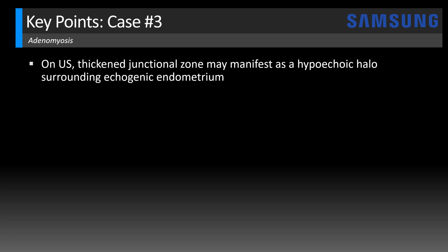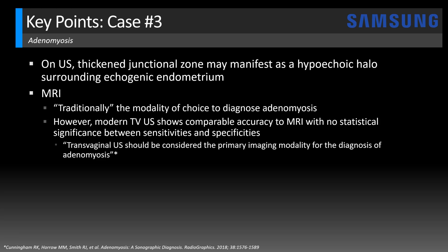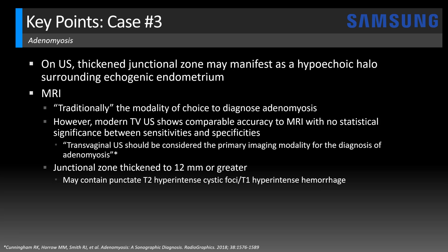Key points for the final case: On ultrasound, although not always seen, the thickened junctional zone may manifest as a hypoechoic halo surrounding the echogenic endometrium. MRI has traditionally been the modality of choice to diagnose adenomyosis; however, modern transvaginal ultrasound shows comparable accuracy. Studies show no statistical significance between sensitivities and specificities of transvaginal ultrasound and MRI. In fact, Drs. Cunningham, Harrow, and Smith state that transvaginal ultrasound should be considered the primary imaging modality because it's effective, safe, widely available, and lower cost relative to MRI. The key MRI finding is junctional zone thickening of 12 mm or greater, which is highly specific. Punctate T2 hyperintense cystic foci or T1 hyperintense areas of hemorrhage within the junctional zone thickening add further specificity.